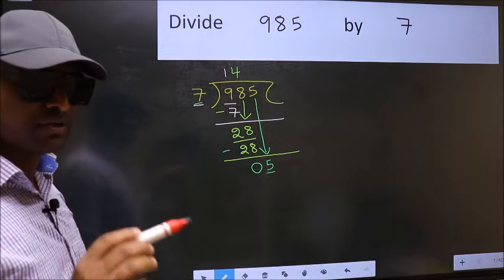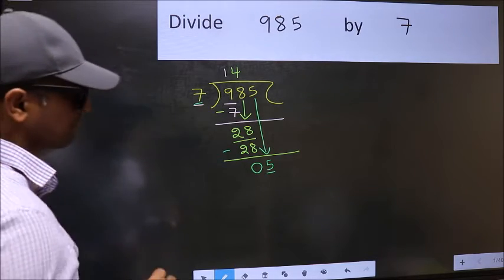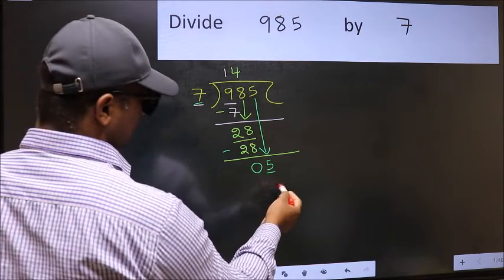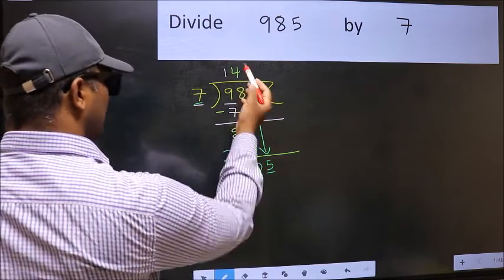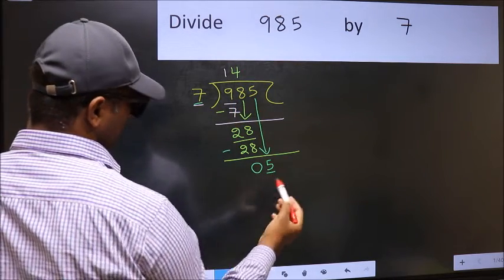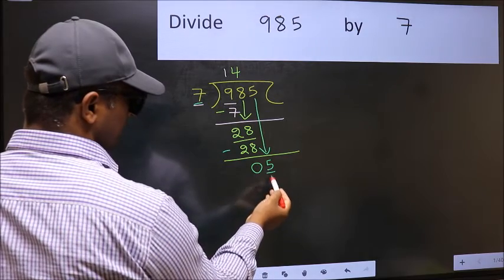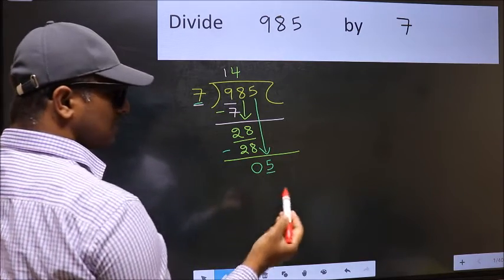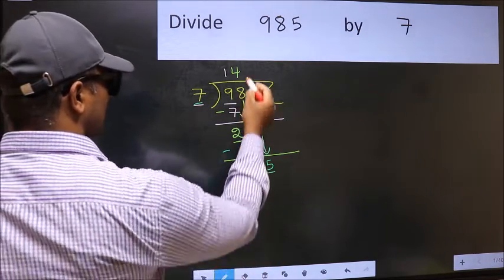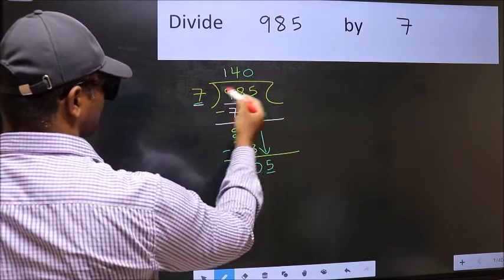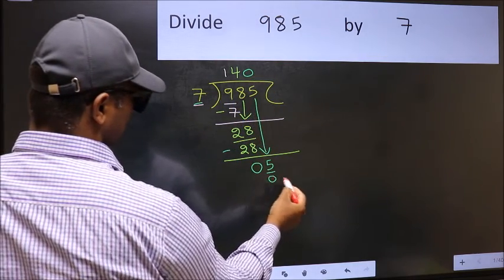Instead, what you should think of doing is which number should we take here. If I take 1, we will get 7, but 7 is larger than 5. So what we should do is take 0. So 7 into 0 is 0.